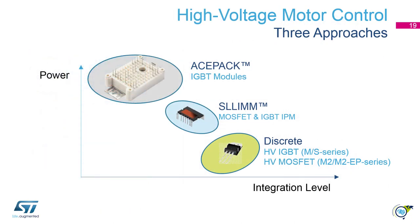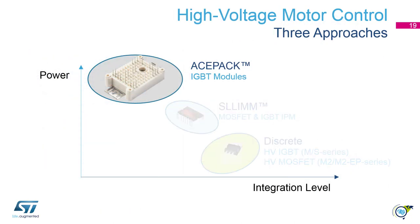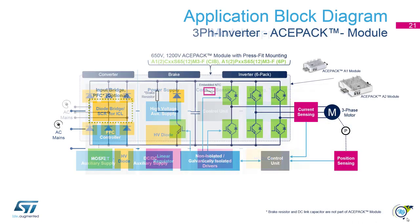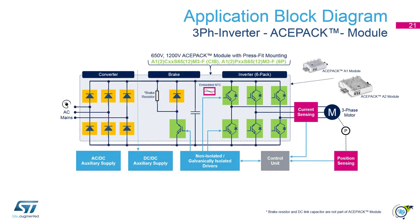Let's now jump to the new family of SD Power modules, the ASPAC IGBT modules. In this application block diagram we see that the ASPAC module can contain the diode bridge on the left side, the three-phase inverter on the right side, and the brake IGBT on the bottom right. This package hosts six diodes for the converter, six IGBTs for the inverter, and one IGBT plus diode for the brake. The IGBTs and diodes are made by STMicro and optimized for motor control applications.